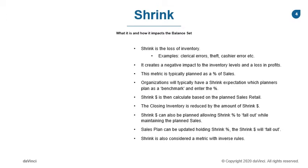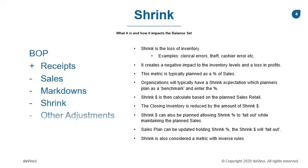Shrink is another metric that negatively impacts your balance set. Shrink is a loss of inventory that can be attributed to different factors such as clerical errors or theft. Regardless of what the factor is, it ultimately is a loss of profits. Typically, retailers will plan a shrink expectation or a shrink rate. Your planner can plan this at a season or year level based on history. When you update the shrink dollars in the plan, it reduces your closing inventory. Shrink dollars also have the inverse rule we discussed in the last session.